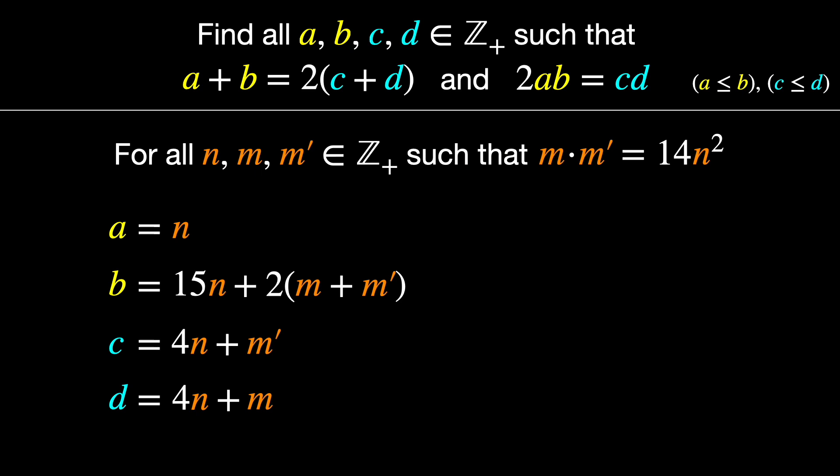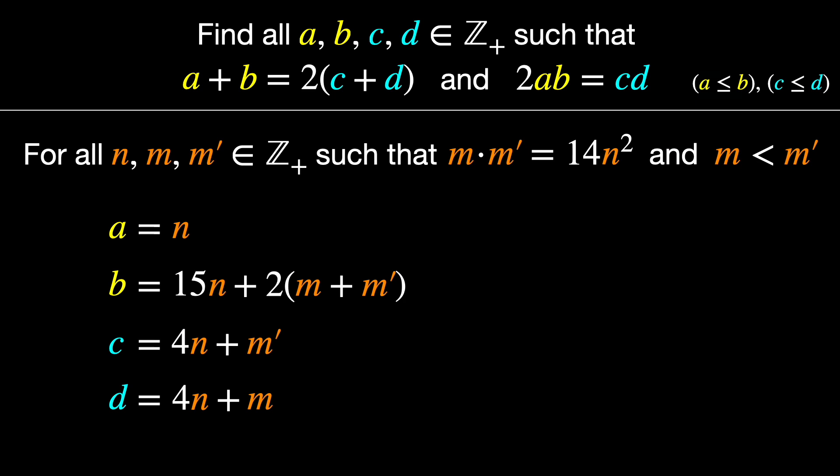There's a few finishing touches we should add to this answer. Note that if you switch M and M prime, then A and B don't change, but C and D switch places. So we might as well eliminate that redundancy by saying that M should be less than M prime. Now we should check on our criteria that A is less than or equal to B, which, yep, clearly true. And that C is less than or equal to D. Well, since we said M is less than M prime, we need to switch those two around. There, that'll do it. And we're done.